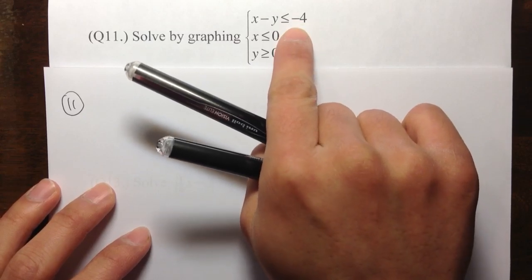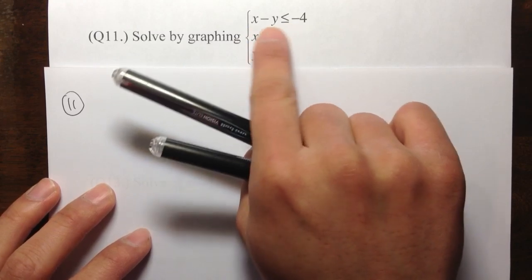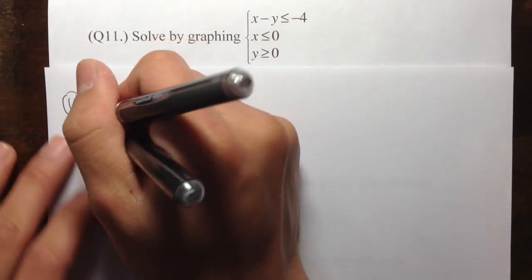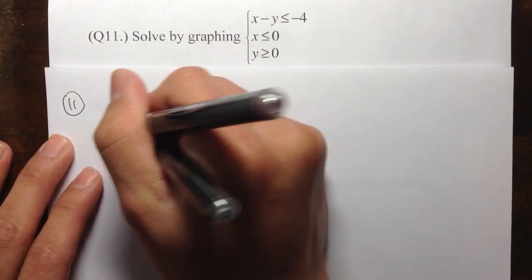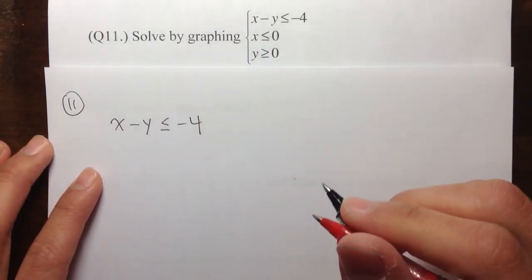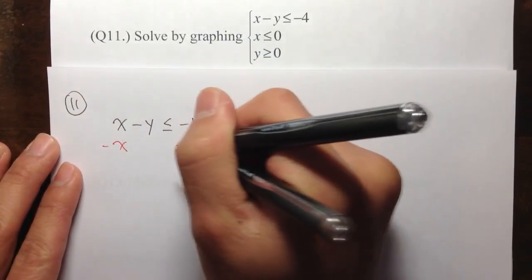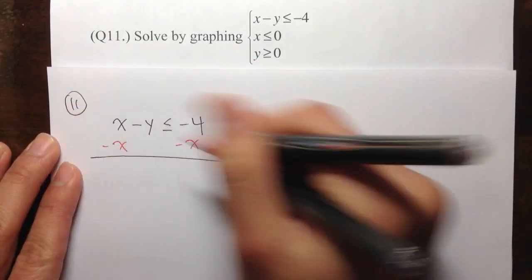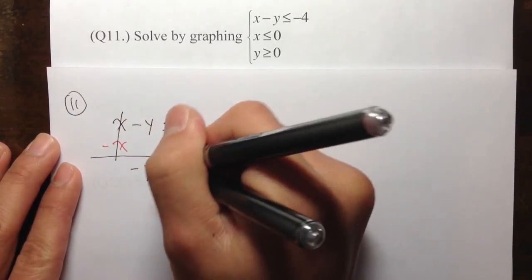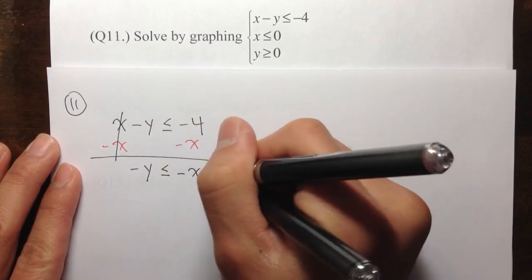Let me work with this equation first. To graph something like this, we need to isolate the y first. So x minus y is less than or equal to negative 4 — I isolate the y first. To do that, subtract x on both sides, that cancels to 0, and I have negative y, less than or equal to negative x minus 4.